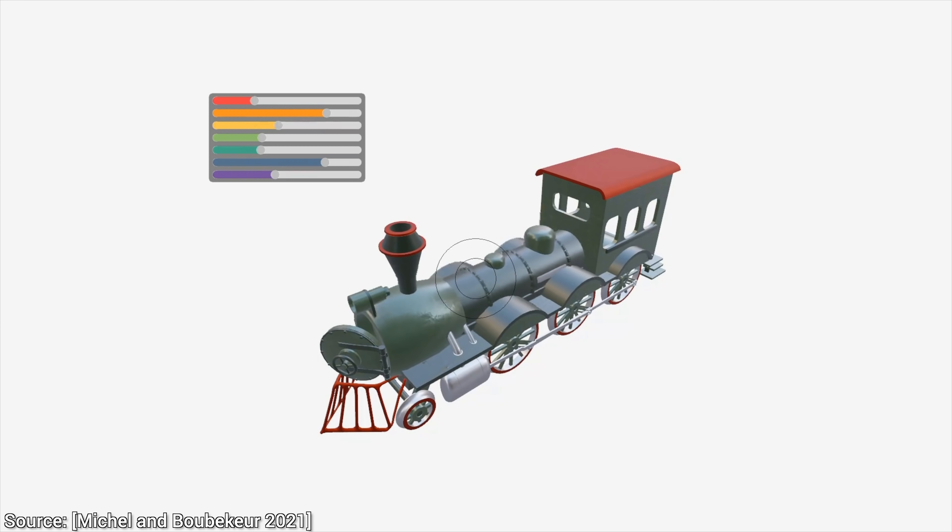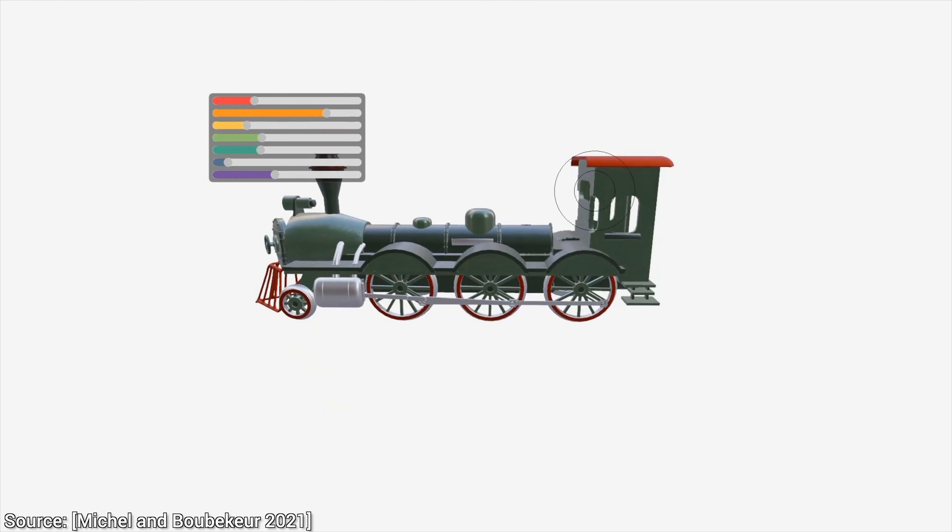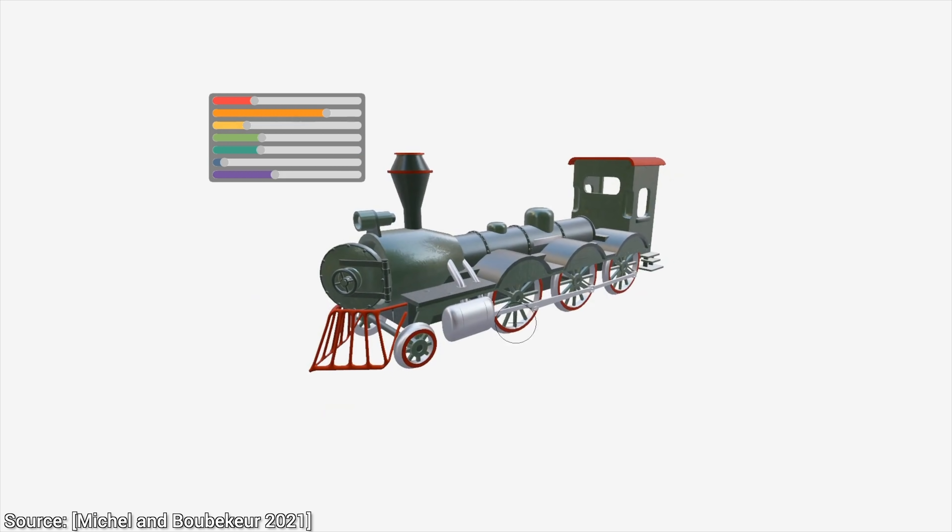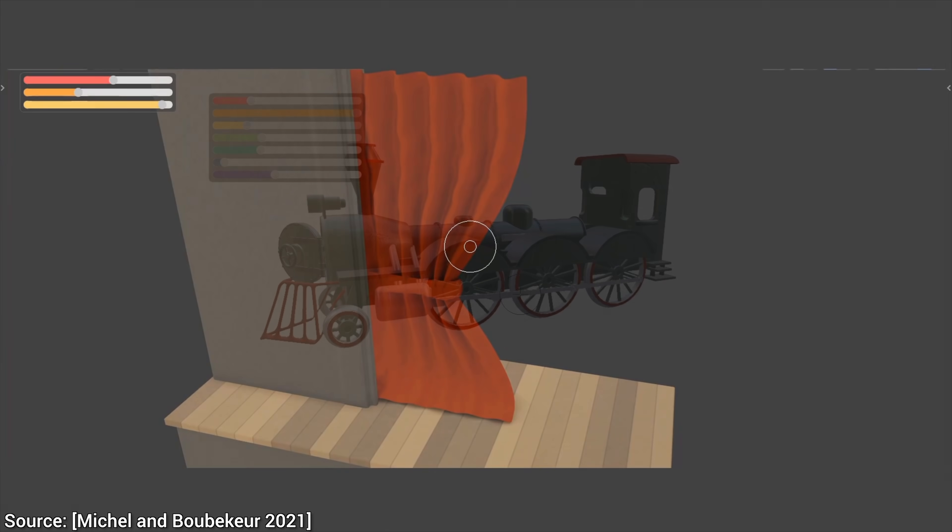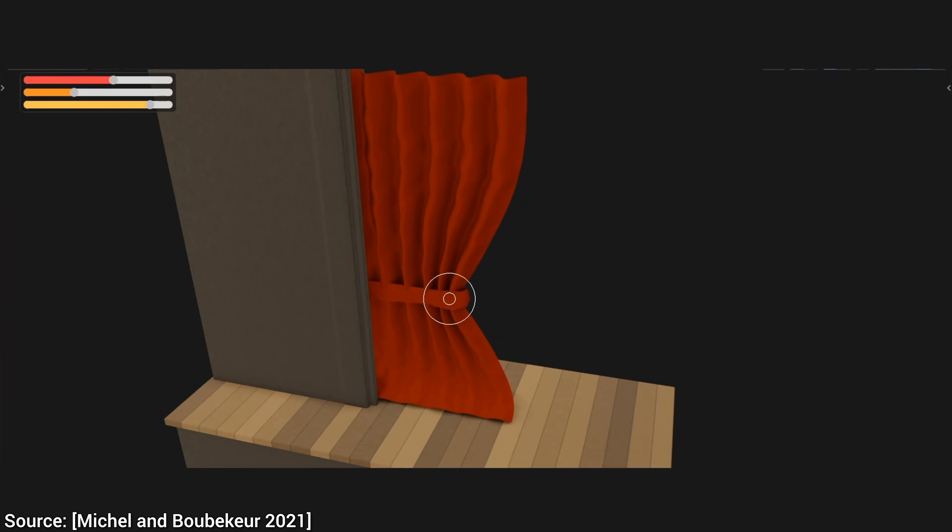For instance, have a look at this train example, where if we change the wheels, it understands that not only the wheels, but the wheel wells also have to change as well. This concept also works really well on this curtain.